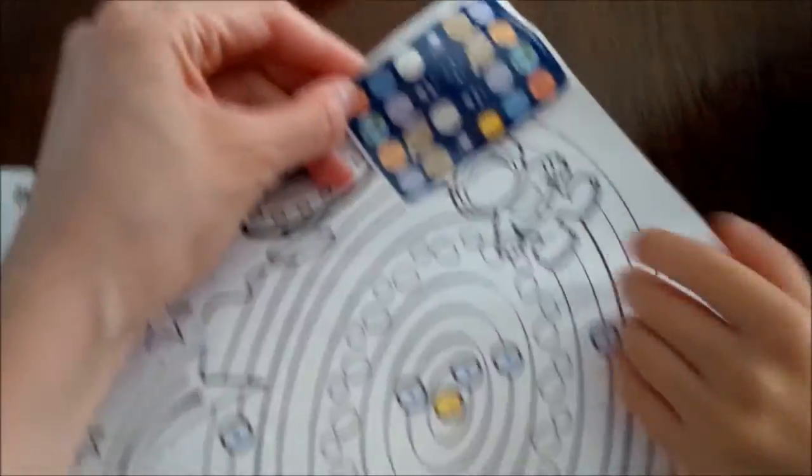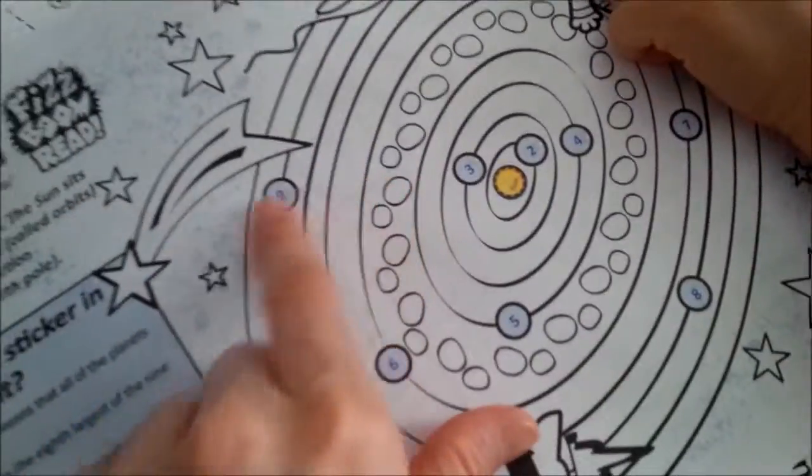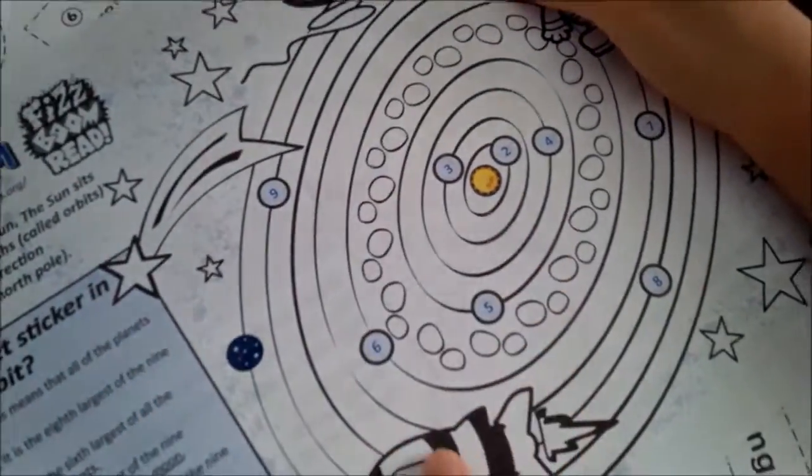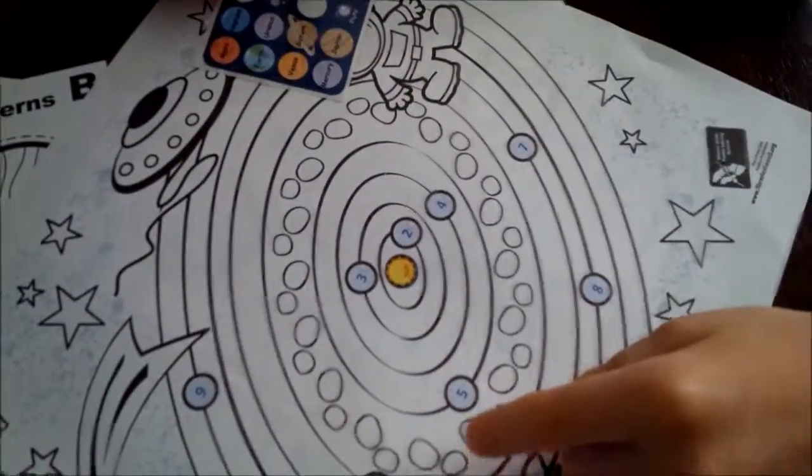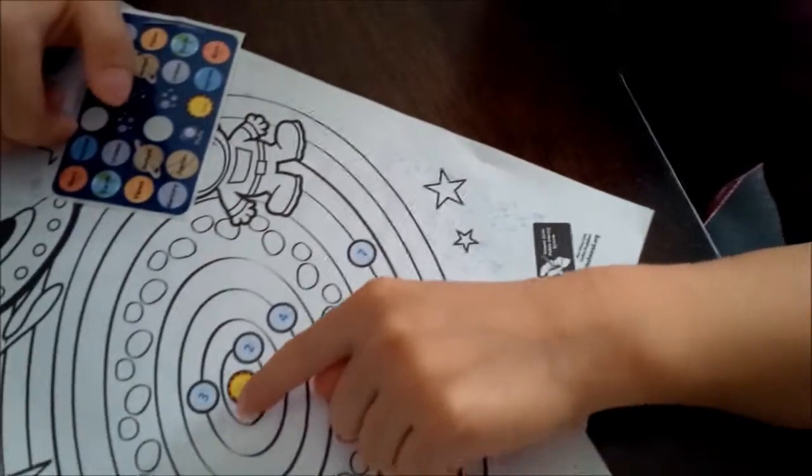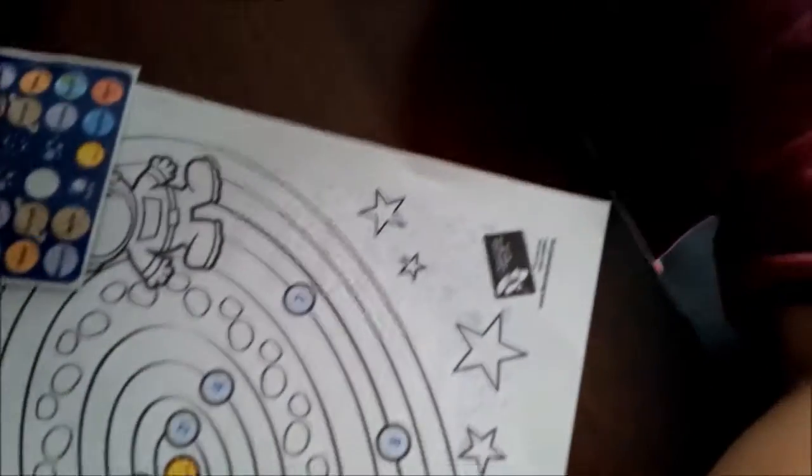This one comes with stickers so you could grab a sticker and then arrange it in here. You could color it. Mercury orbit. What does that mean? Mercury orbit, that's number two. Where's number one?